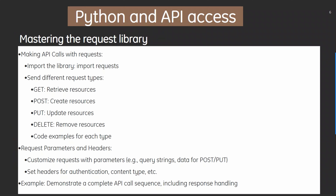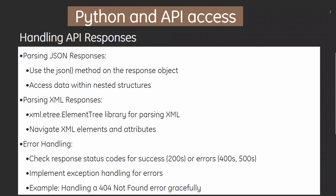Next, we have Python and API access. First, mastering the requests library — making API calls by importing the library, sending different request types such as GET, POST, PUT, and DELETE. We can customize requests with parameters and headers, including query strings, data for POST output, and headers for authentication and content type.